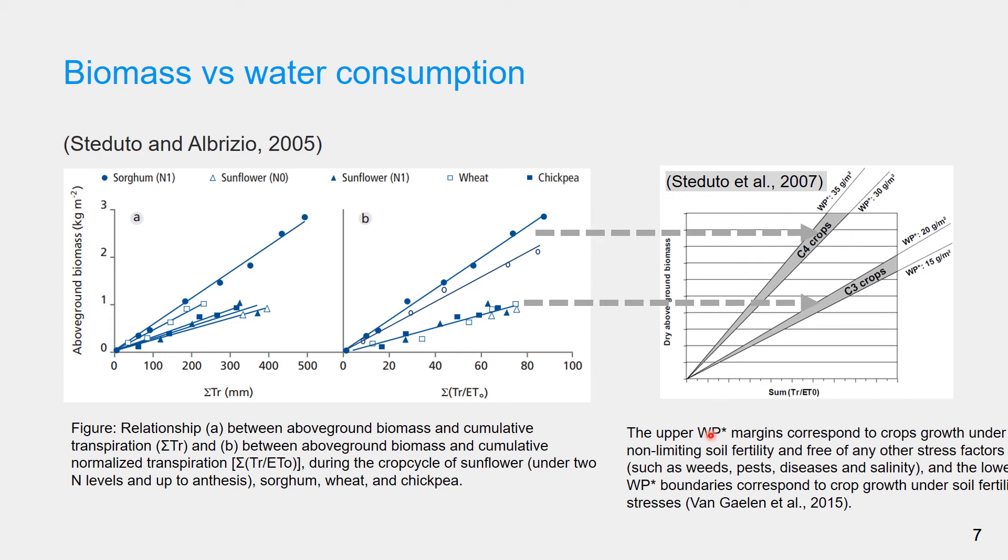Under each category of crop, that is C3 and C4, there are two boundary lines. The upper boundary corresponds to the optimal condition while the lower boundary is under soil fertility stress.